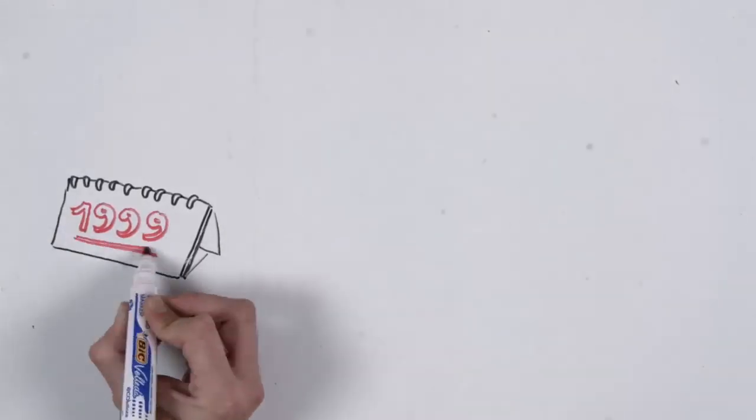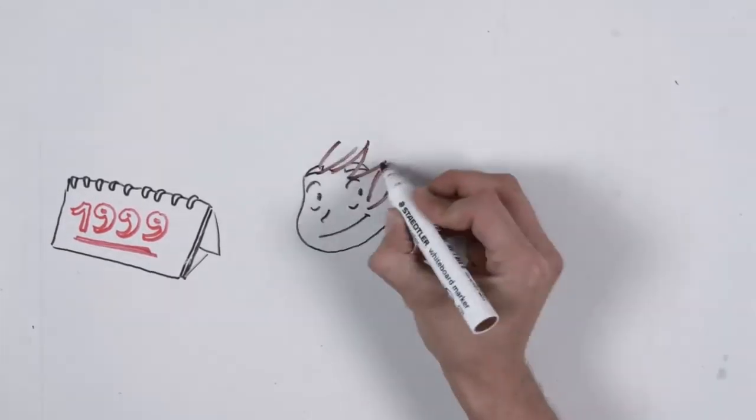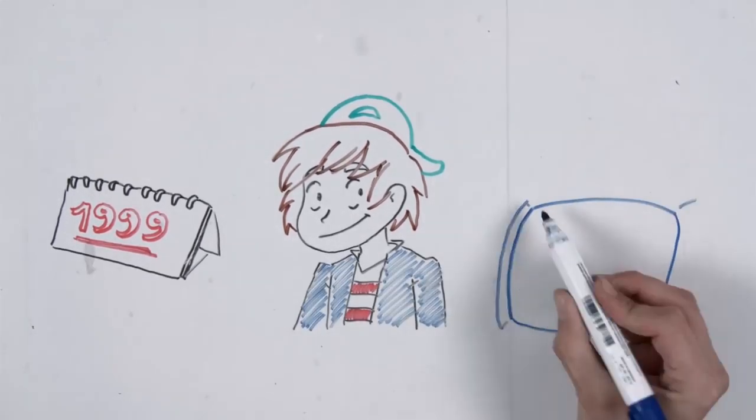In 1999, Elliot's life changed forever. Elliot was a very normal child. He loved Pokemon like almost every child at that time.